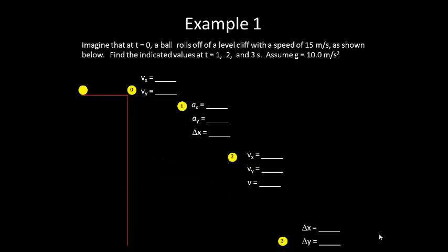So let's consider a problem. Imagine that at t equals 0, a ball rolls off a level cliff with a speed of 15 meters per second as shown below. Find the indicated values at t equals 1, 2, and 3 seconds. Assume g equals 10 meters per second squared. For this, we're not going to worry about significant figures and just try to understand what's happening to the ball as it falls.